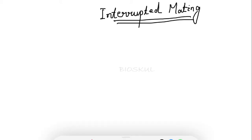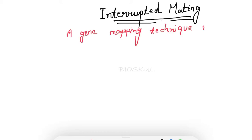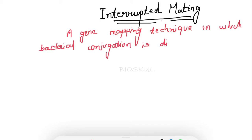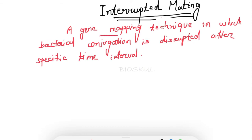So first, what is interrupted mapping? It is a gene mapping technique in which bacterial conjugation is disrupted or interrupted after a specific time interval.